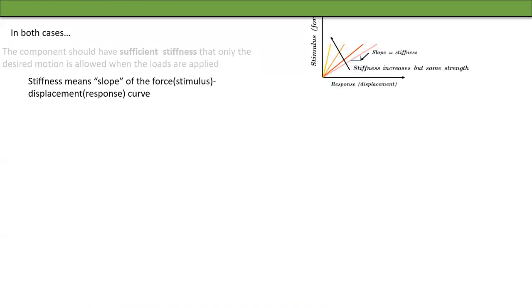In both cases, that is frames or mechanisms, the component should have sufficient stiffness that only the desired motion is allowed when the loads are applied. By stiffness, we mean the slope of the force displacement curve or the stimulus response curve. In this graph, the four lines represent materials with different stiffnesses. And the slope of these lines is the stiffness. Notice that the lines all end at the same height. We will come back to that in a second.